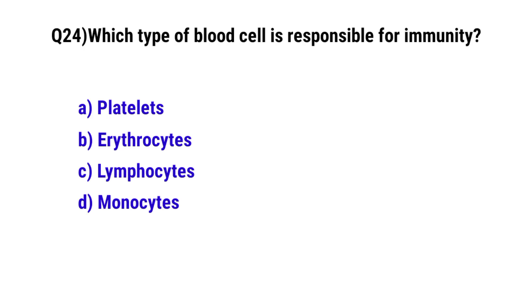Question number twenty-four: Which type of blood cell is responsible for immunity. The correct option is C, lymphocytes.